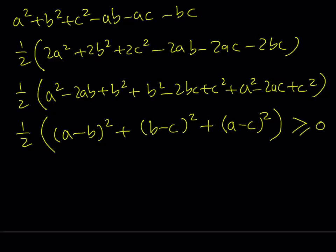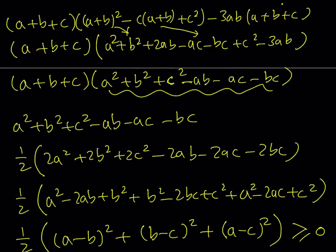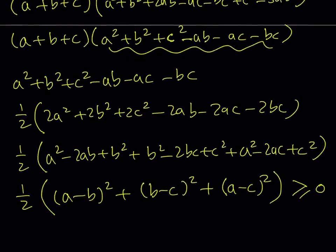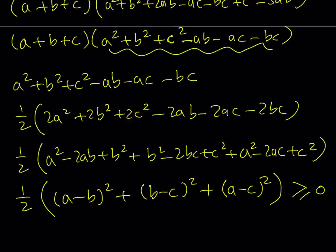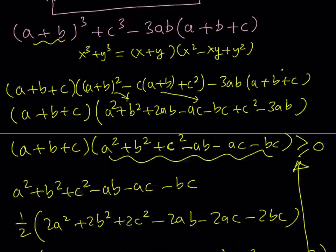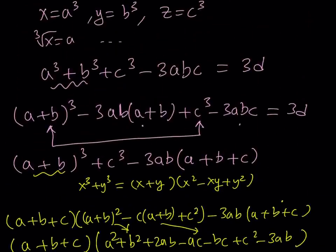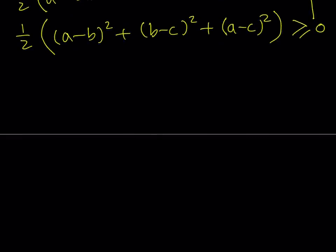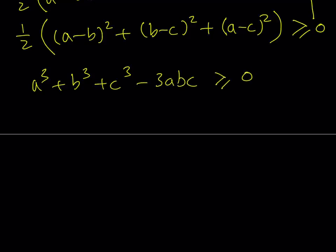Since a sum of squares can never be negative, this expression is always greater than or equal to zero. Also, A plus B plus C is always greater than or equal to zero because A, B, C are all greater than or equal to zero. Therefore the entire expression A cubed plus B cubed plus C cubed minus 3ABC is always greater than or equal to zero whenever A, B, C are all greater than or equal to zero.